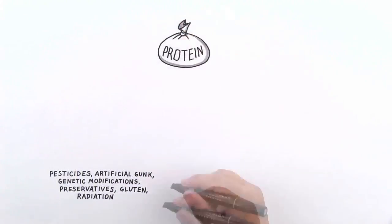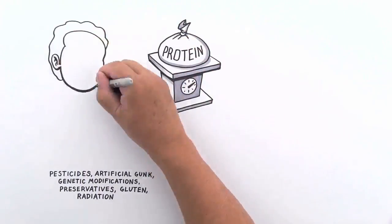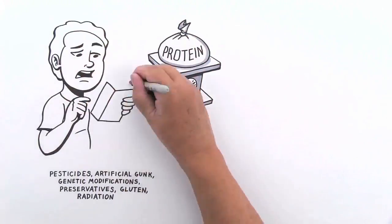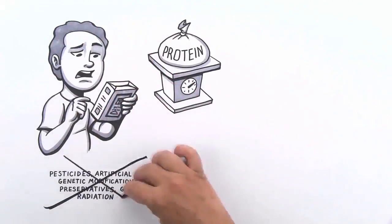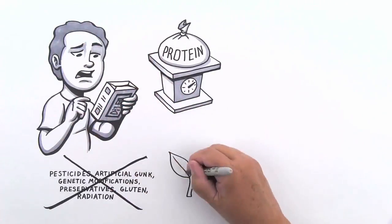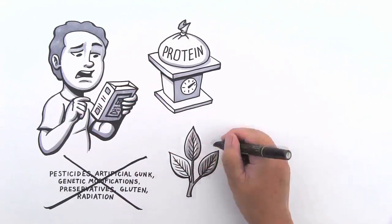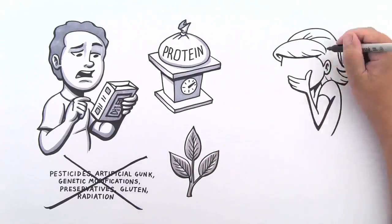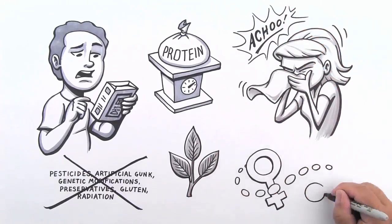Sun Warrior provides just the right amount of protein—not too much, not too little. Don't want pesticides, artificial gunk, genetic modifications, preservatives, gluten, or radiation? Who would? Don't worry, Sun Warrior doesn't have any of that. They use only the finest plant proteins. They also don't use soy for those who have allergies or don't want the phytoestrogens in soy messing around with their hormones.